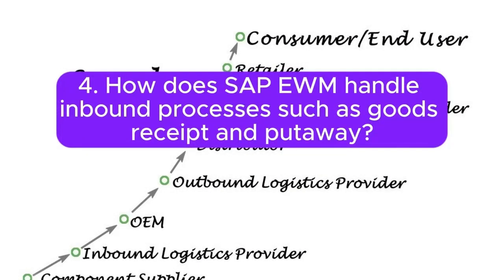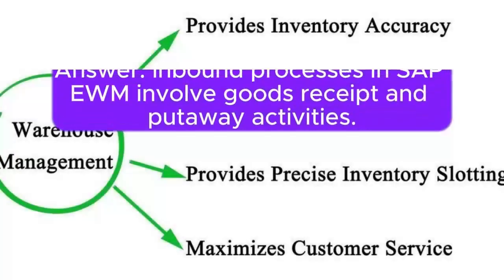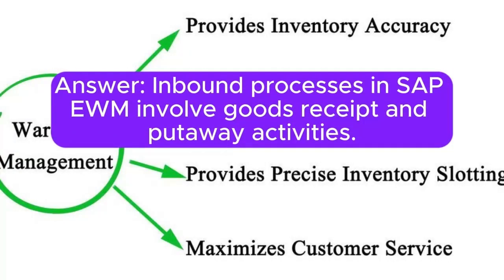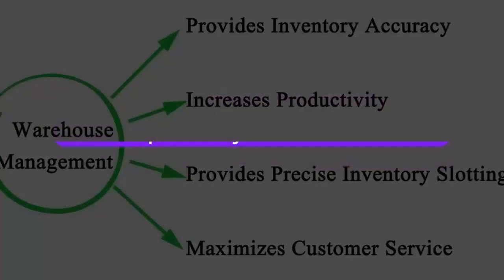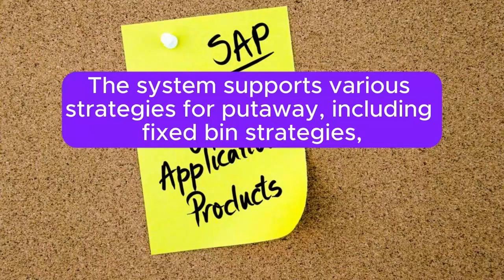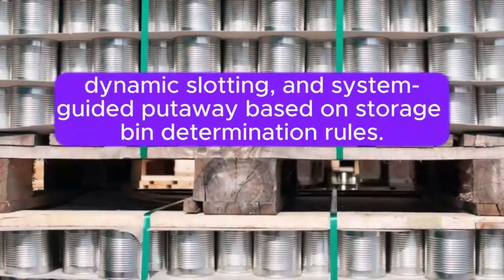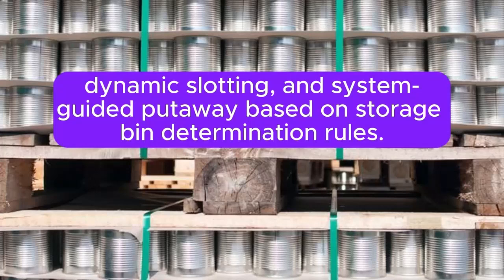Question 4: How does SAP EWM handle inbound processes such as goods receipt and putaway? Inbound processes in SAP EWM involve goods receipt and putaway activities. The system supports various strategies for putaway, including fixed bin strategies, dynamic slotting, and system-guided putaway based on storage bin determination rules.